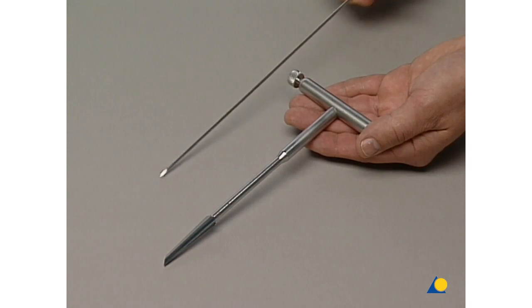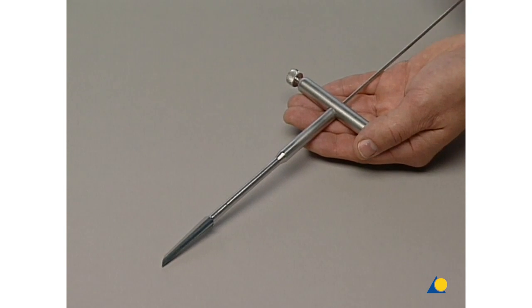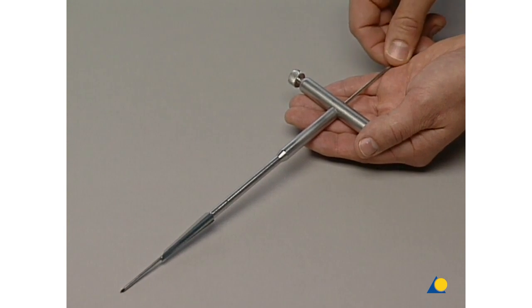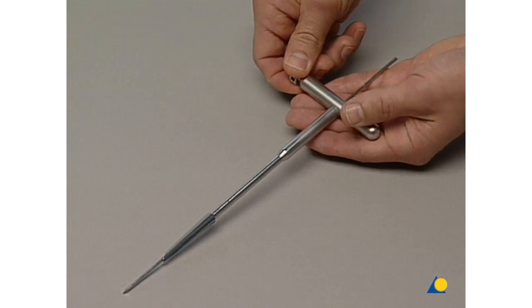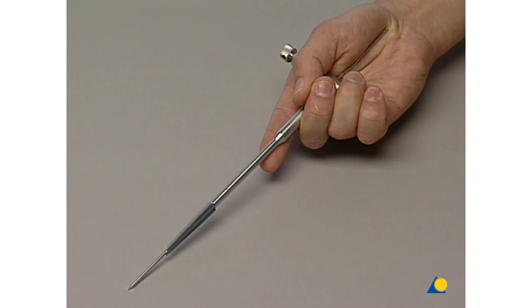Additionally, we use the cannulated awl with T-handle and a 2.5 mm Kirschner wire. We insert the Kirschner wire into the cannulated awl and tighten the screw. For your own safety, be sure to hold the instrument correctly.